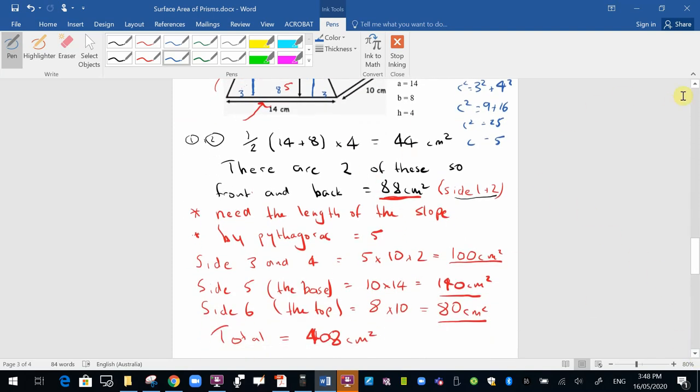And then shape 5, the base, is 10 times 14, is 140. So shape 6, which is the very top, 8 times 10 is 80. And then we just add up all of those, and I'll put that here. The total is 408 centimeters squared.